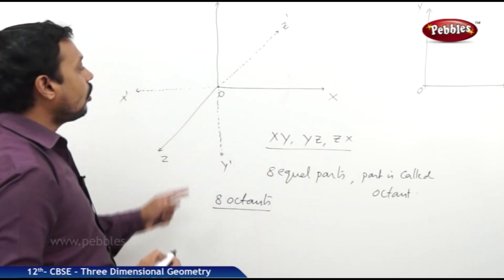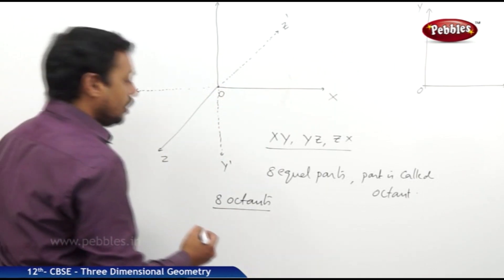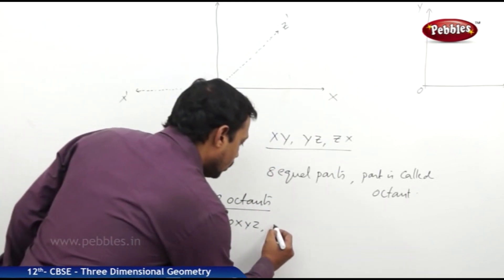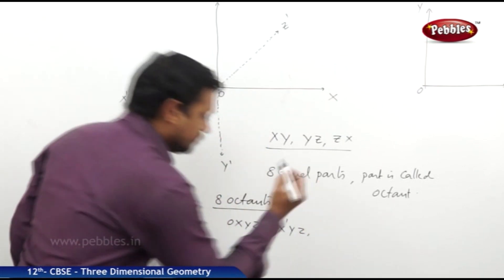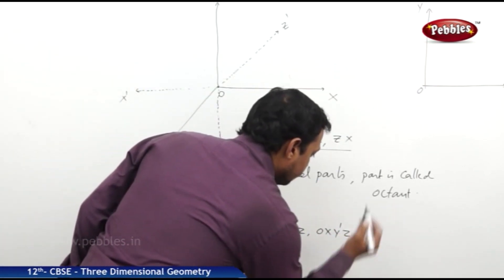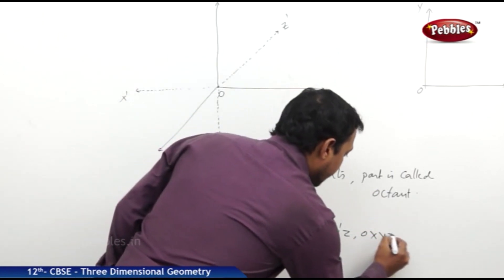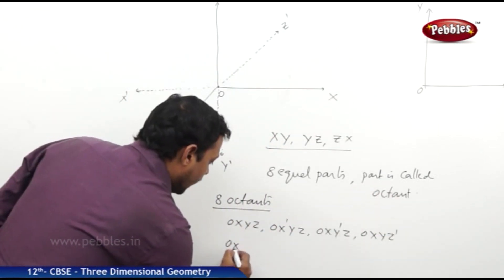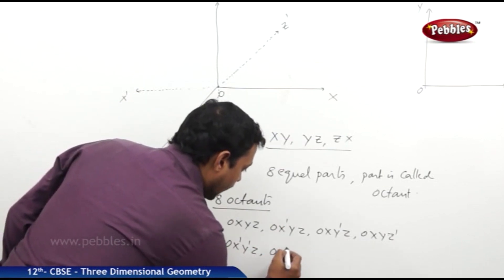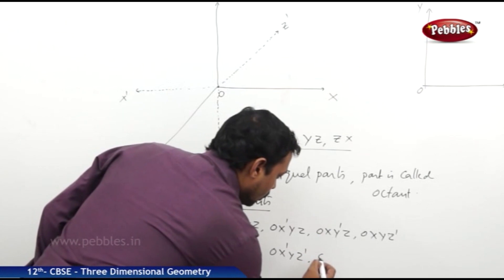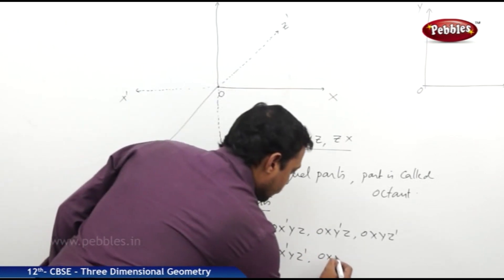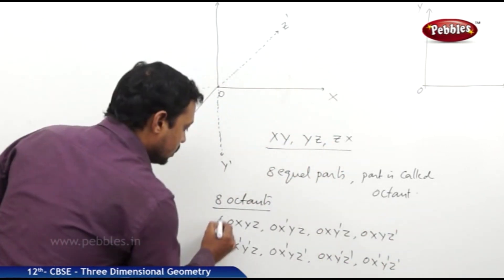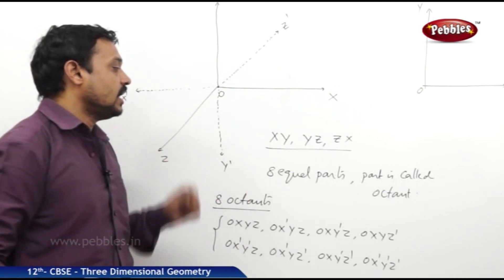The eight octants of three-dimensional geometry are: Oxyz, Ox′yz, Oxy′z, Oxyz′, Ox′y′z, Oxy′z′, Ox′yz′, and Ox′y′z′. These are the eight octants in three-dimensional geometry.